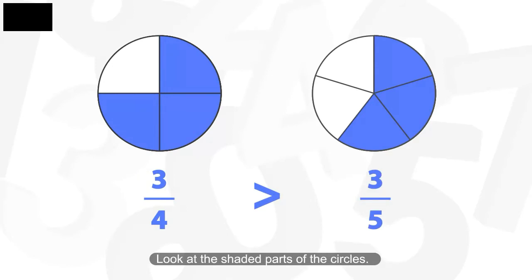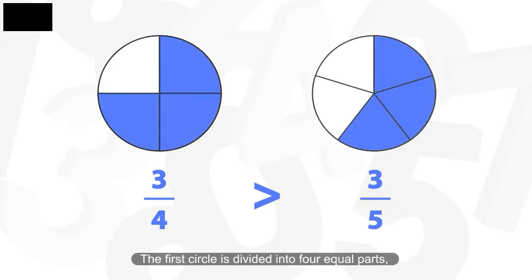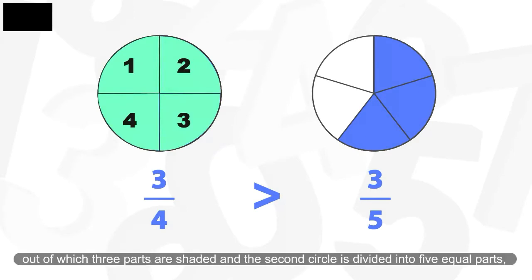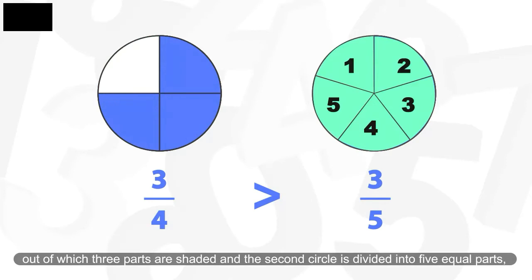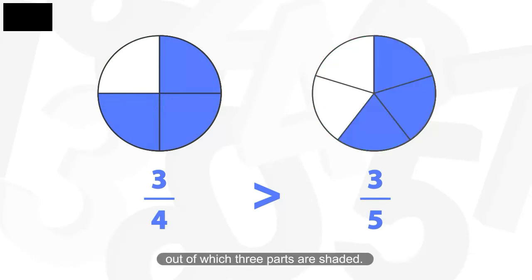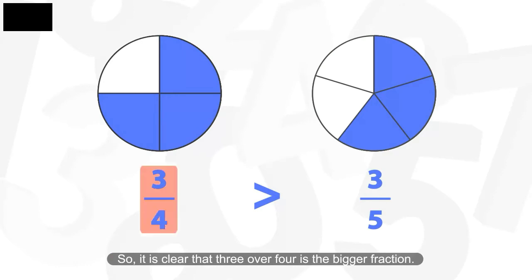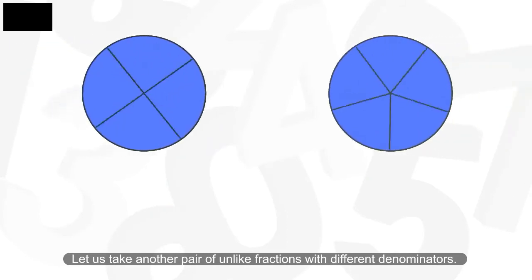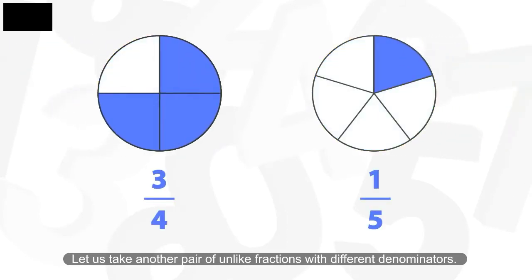Look at the shaded parts of the circles. The first circle is divided into 4 equal parts, out of which 3 parts are shaded, and the second circle is divided into 5 equal parts, out of which 3 parts are shaded. So it is clear that 3 over 4 is the bigger fraction.